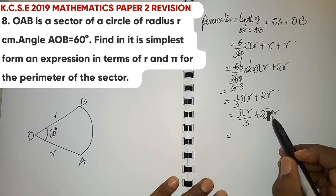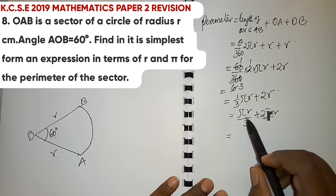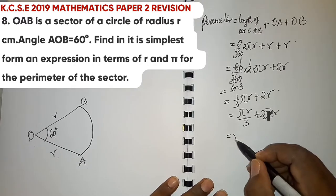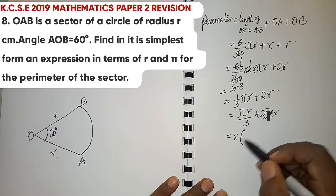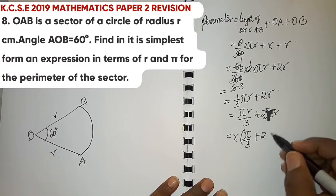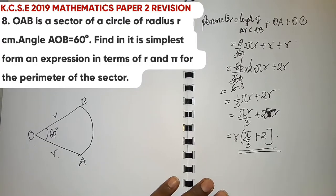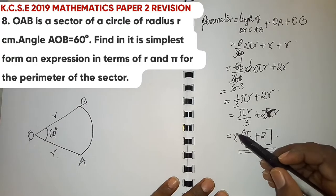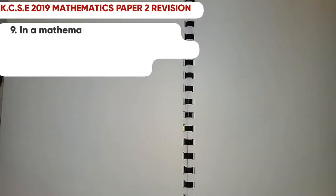Factoring out r from πr/3 + 2r: the perimeter = r(π/3 + 2). This is the perimeter of the sector expressed in terms of r and π.